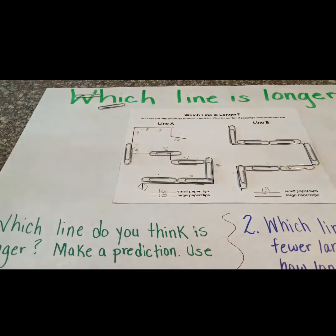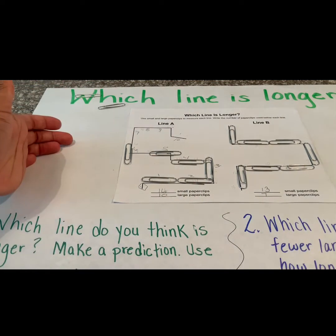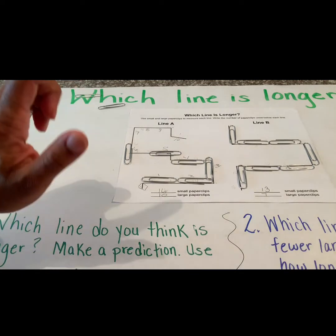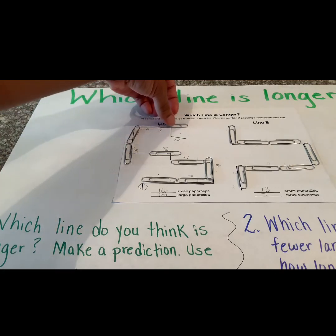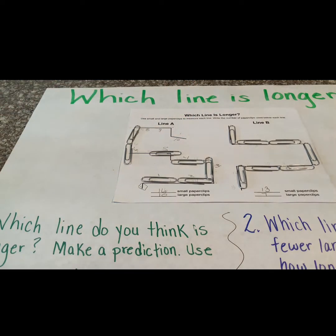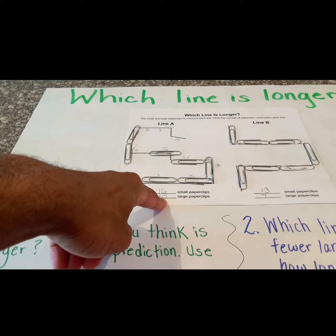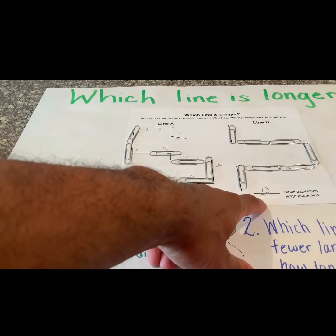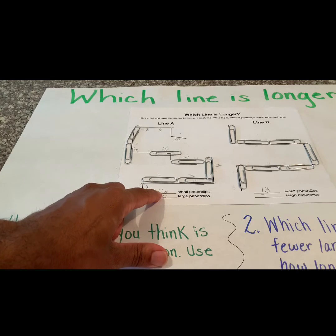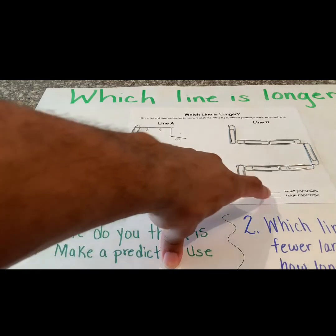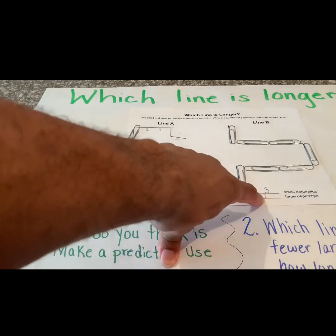So our large paperclip count is about ten for this line, just because we have so many curves and small angles. So six, seven, eight, half, half, nine, and then ten. My large paperclip here is about ten. So I thought line B probably uses less paperclips — I was right, because line A uses ten large paperclips compared to line B using seven. The reason I came up with that prediction is because line A uses more small paperclips than line B, so that means line A is longer than line B.